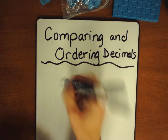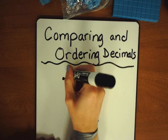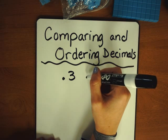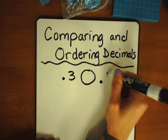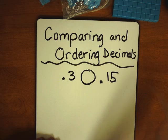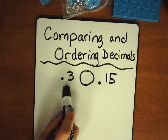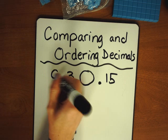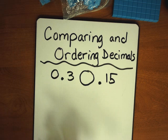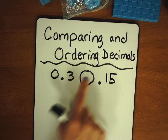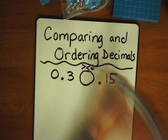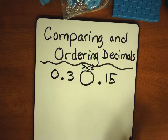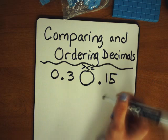I want us to take a look at this decimal here versus this decimal right here. Go ahead and read this one for me. We've got zero ones and three tenths, right? We're going to decide whether this is greater than, less than, or equal to — what do we have here, friends? Fifteen hundredths. Fifteen hundredths, that's right.